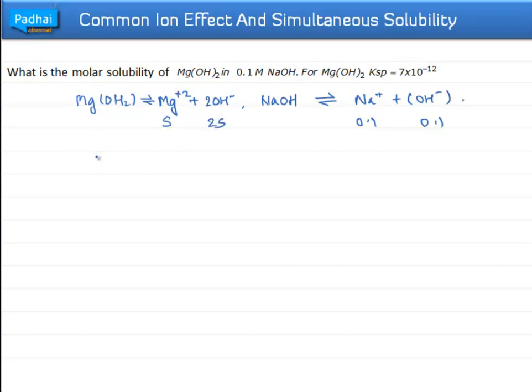We can write Ksp for Mg(OH)2 as S multiplied by (2S)².